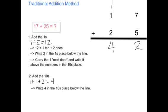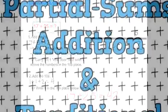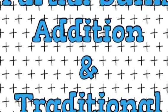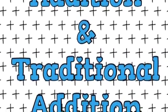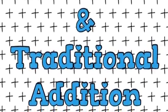So my final answer is 42. Using the traditional addition method, I have learned that 17 plus 25 equals 42. Thanks for learning about partial sums addition and traditional addition methods.